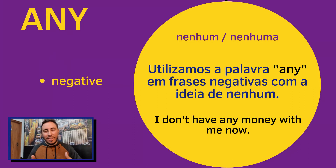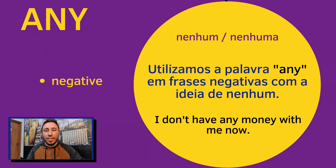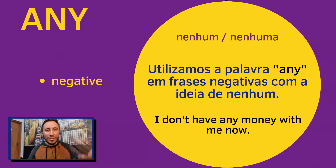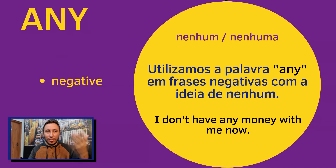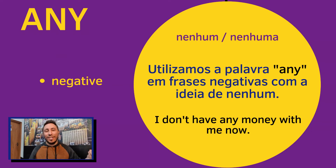Negative sentences: if you say a negative sentence and you decide to use the word any, the word any will get the translation of nenhum, nenhuma. For example: I don't have any money with me now — eu não tenho nenhum dinheiro comigo agora. Here in this sentence we have the negative auxiliary don't. After using don't, if you want to say nenhum or nenhuma, you cannot use no — the only possibility is the word any, because you cannot have two negative words in one sentence. I don't have any money — eu não tenho nenhum dinheiro.